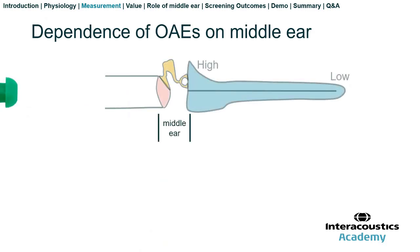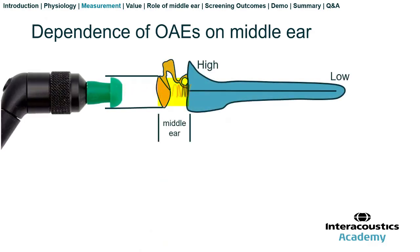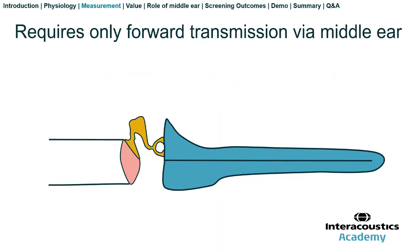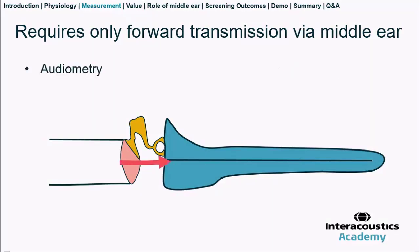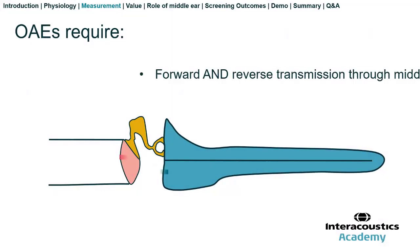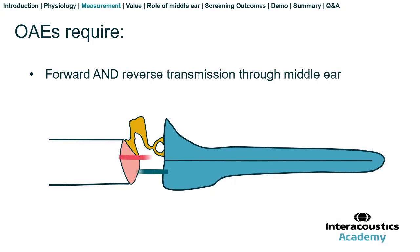One important aspect of OAEs is that the stimulus travels through the middle ear to stimulate the outer hair cells, and the response then has to travel back through the middle ear before arriving at the microphone. This is true for both distortion product and transient evoked otoacoustic emissions. Sound conduction via the middle ear is important for most tests of sensorineural function, including audiometry and auditory evoked responses — those measurements depend only on forward transmission. However, OAEs depend on both forward and reverse transmission via the middle ear, so OAEs depend more heavily on the integrity of the middle ear.